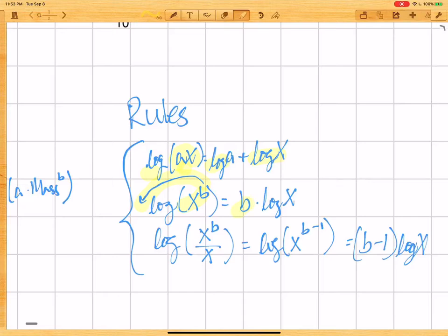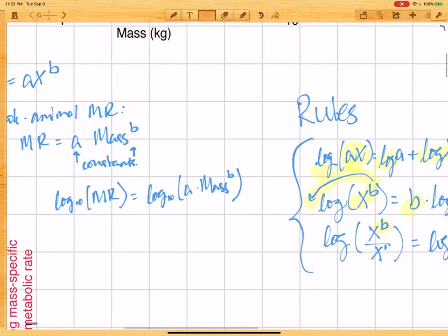And then, similarly, the log of a quotient, where you have a power here above, and then don't forget that when you have an x in the denominator, it's x raised to the 1 power. Okay, so you can first simplify this ratio and subtract the exponents. Okay, and then when you take the log, again, it just comes out front here, and you have b minus 1 times log of x. Okay? So if you remember these rules, then it's pretty straightforward.